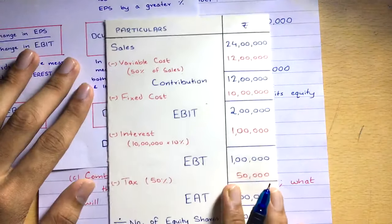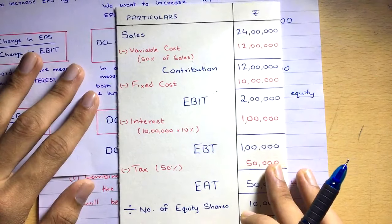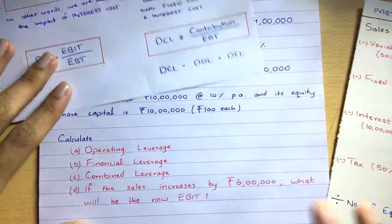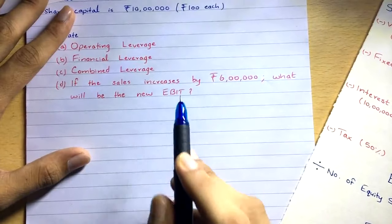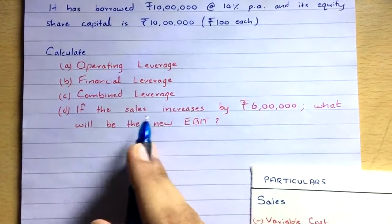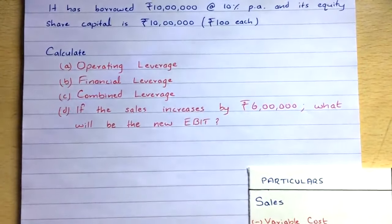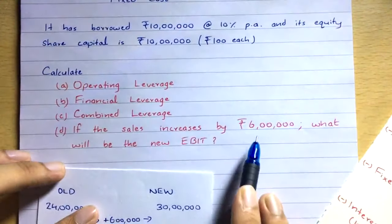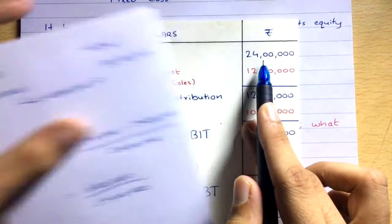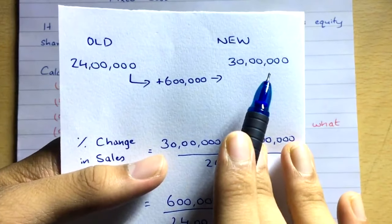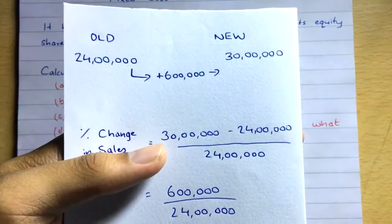Now for part (d): if sales increases by 6 lakh, what will be the new EBIT? Currently sales is 24 lakh; if it increases by 6 lakh, new sales = 24 lakh + 6 lakh = 30 lakh. We need to calculate the new EBIT by finding the change in EBIT and adding it to the old EBIT.